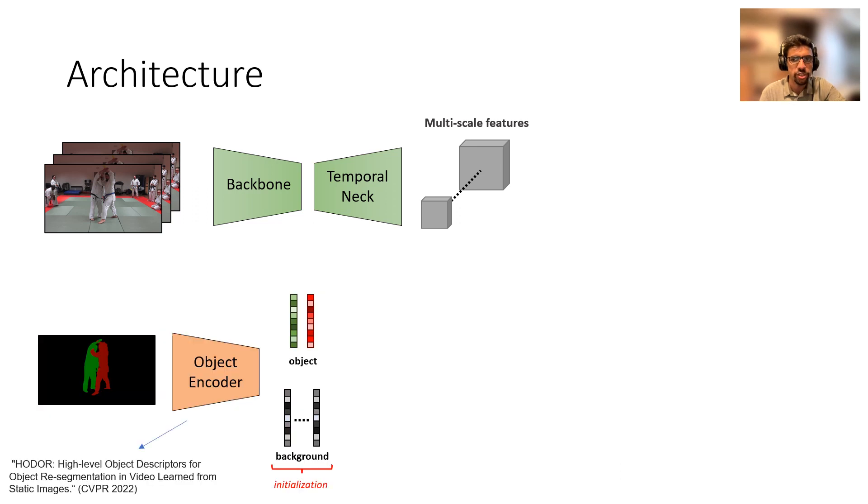For video object segmentation, we know beforehand which objects need to be tracked based on their first frame masks. To encode these targets as queries, we use an object encoder which is based on our earlier work. In a nutshell, it works by averaging the image features inside each object mask followed by iterative self-attention and mask cross-attention to refine the representation.